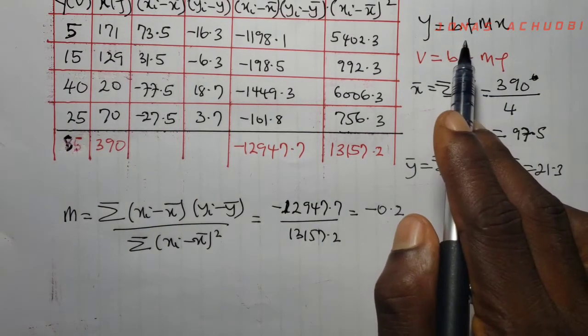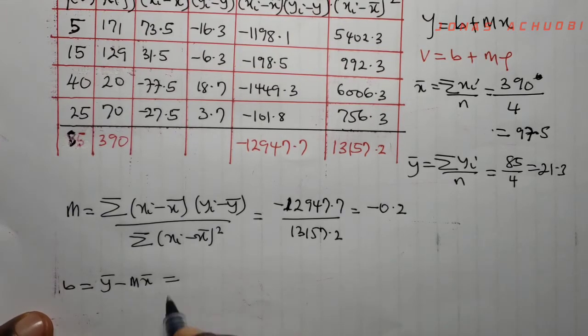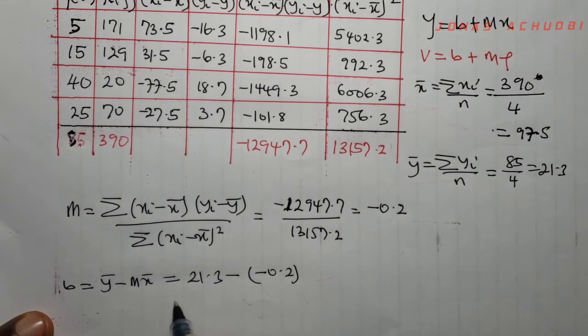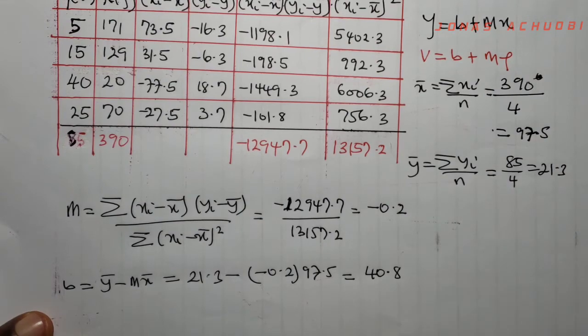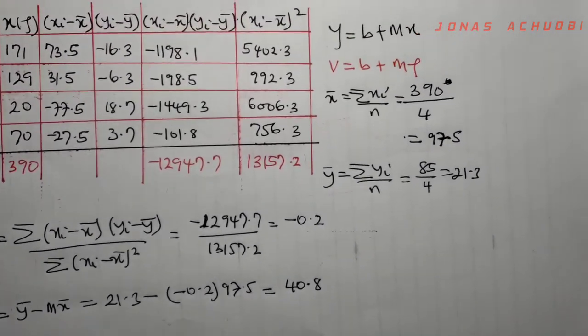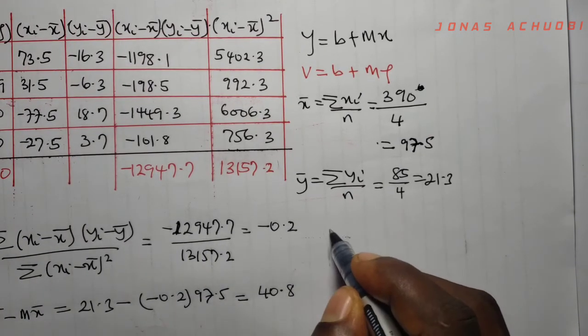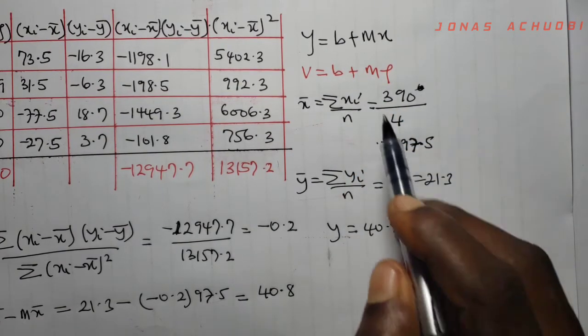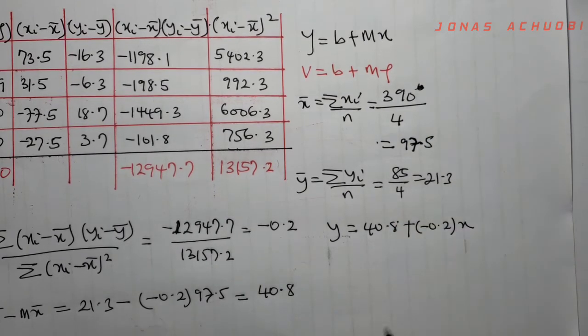And b gives us y bar minus m x bar, so y bar is 21.3 minus our m which is minus 0.2 times x bar which is 97.5. If we evaluate this carefully we get 40.8. So we now have the parameters of our line obtained.